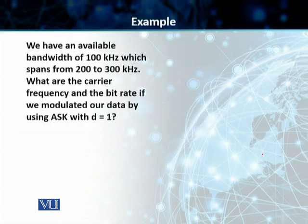We will do an example. In this case, we have an available bandwidth of 100 kHz and it spans from 200 to 300 kHz. We need to find the carrier frequency and we need to find N, which is the bit rate. If the data is modulated using ASK with D equal to 1, and we are using one signal element per data element, so our R is equal to 1 as well.